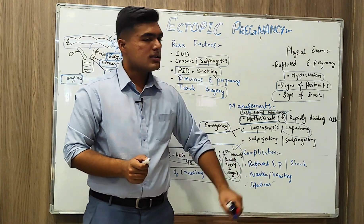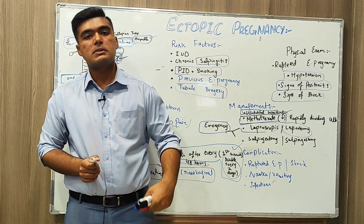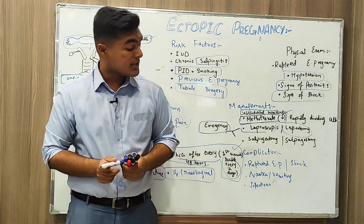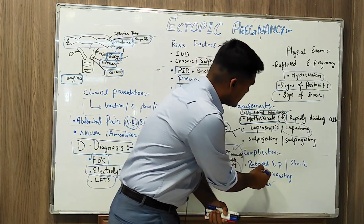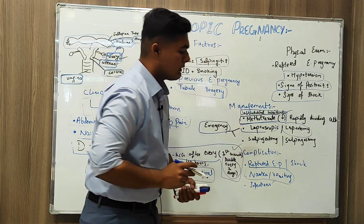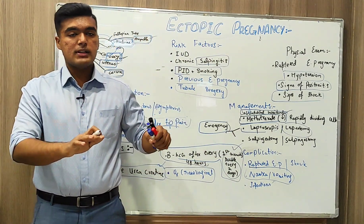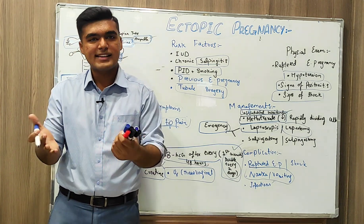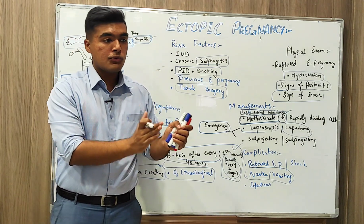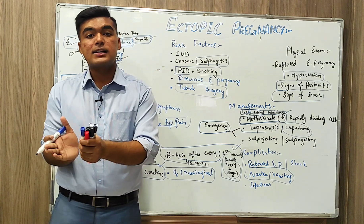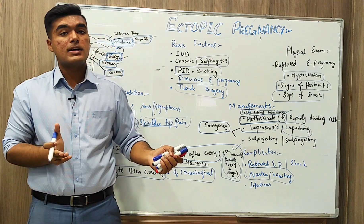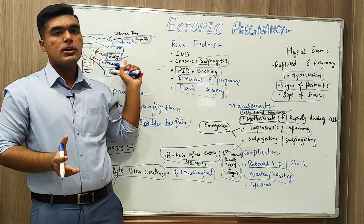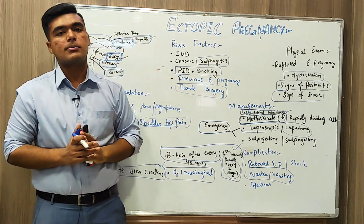Complications include ruptured ectopic pregnancy, shock, infections that may occur due to surgery, and nausea and vomiting. In summary, we have covered how to identify ectopic pregnancy, how to treat it, the differential diagnoses, signs and symptoms, management, what it actually is, and how this abnormality takes place.